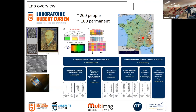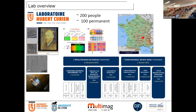A few words about the lab. We are in Saint-Étienne. There are about 200 people, 100 permanent people, and two departments. One department relates to computer science, security, and imaging. Another department covers optics, photonics, and surfaces. Some work involves laser-matter interaction to obtain self-organized structures on matter, or laser-induced self-organized nanoparticles, which can produce colorimetric effects with polarized light. Some colleagues work on diffraction gratings, and my group focuses on magneto-optics.